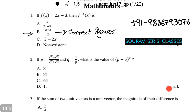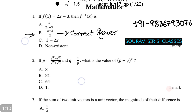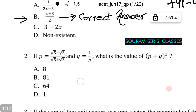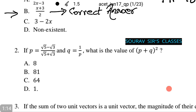Let's see another question. If p equals (root 5 minus root 3) divided by (root 5 plus root 3), and q equals 1 by p, what is the value of (p plus q) squared? These are the following options. Let's see which is the correct answer and how to do it.